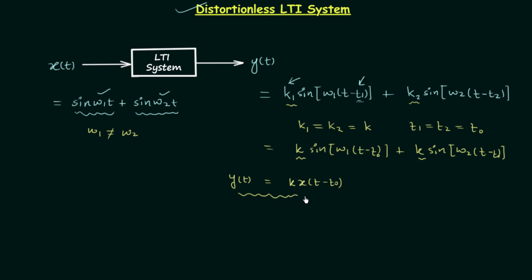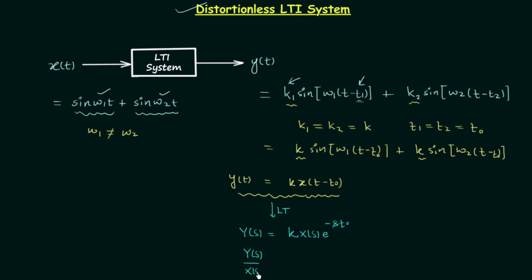Now we will perform the Laplace transform to obtain the transfer function. After the Laplace transform, Y(s) = k · X(s) · e^(−s·t0). Now we will divide both sides by X(s) to get the transfer function. On the left-hand side we will have Y(s)/X(s), which is the transfer function H(s), and it will be equal to k times e raised to the power of minus s·t0.